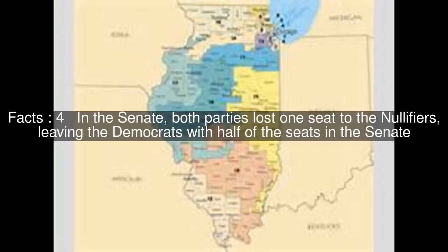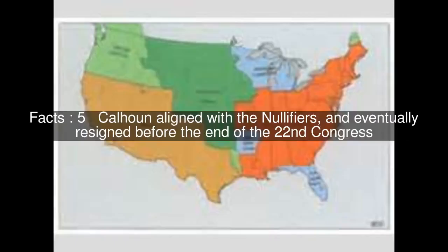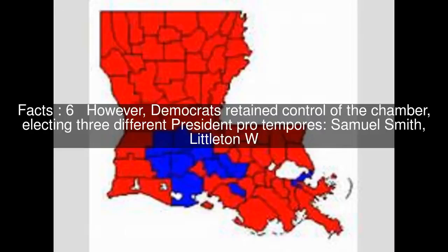In the Senate, both parties lost one seat to the nullifiers, leaving the Democrats with half of the seats in the Senate. Calhoun aligned with the nullifiers and eventually resigned before the end of the 22nd Congress. However, Democrats retained control of the chamber, electing three different presidents pro tempore.